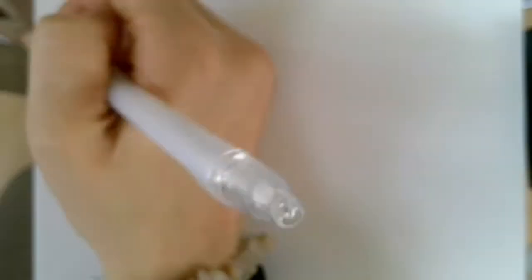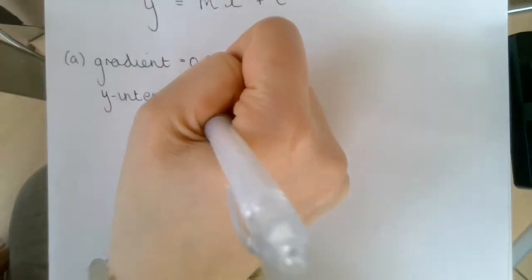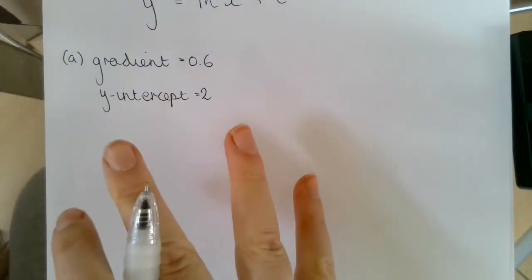The graph has a gradient of 0.6 and meets the vertical axis at 2 as shown. So we know that we've got the gradient is equal to 0.6 and the y-intercept is equal to 2. Just writing down the key information here.